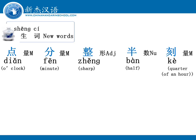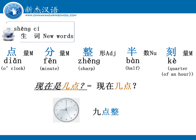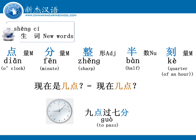问时间用几点。例如，现在是几点？ 请跟我读。 现在是几点？ 现在九点整。 现在几点？ 现在九点过七分。